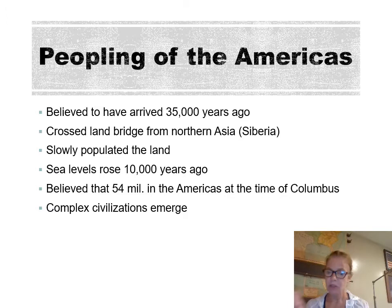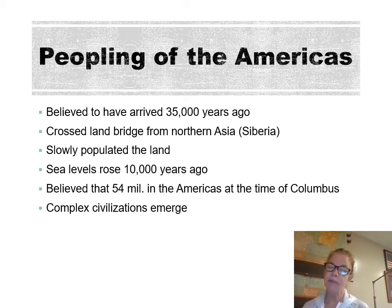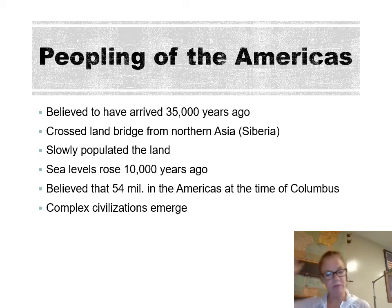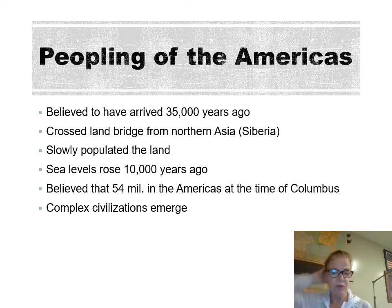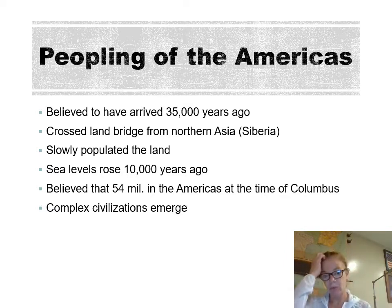When Ferdinand Magellan's expedition circumnavigated the globe — he died in the Philippines — they went through the southern tip of South America and called it Tierra del Fuego, the land of fires, because on both sides there were big fires from the indigenous populations who lived there. The sea levels rose about 10,000 years ago, and then people stopped populating the area, at least for a while.